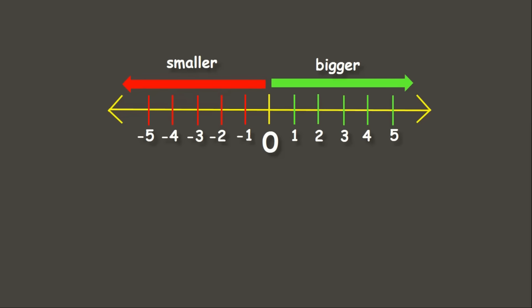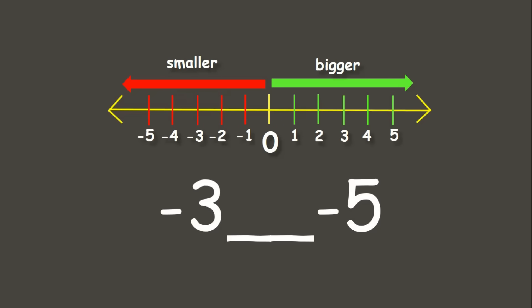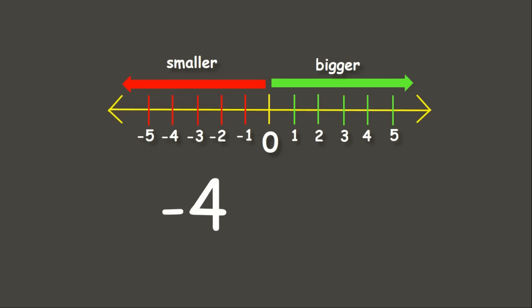Now, what if we are comparing negative numbers? Since negative numbers get smaller and smaller, the bigger the number, the smaller it is. Let's have an example: compare negative 3 and negative 5. It seems that negative 5 is greater than negative 3, but negative 3 is closer to number 0, which means that negative 3 is greater than negative 5. Let's have another example: compare negative 4 and negative 2. Since negative 4 is bigger than negative 2, it means that negative 4 is less than negative 2.